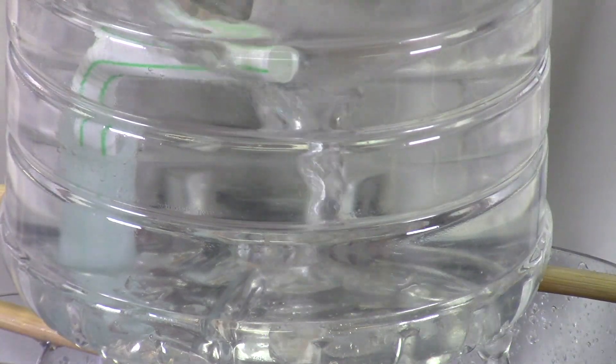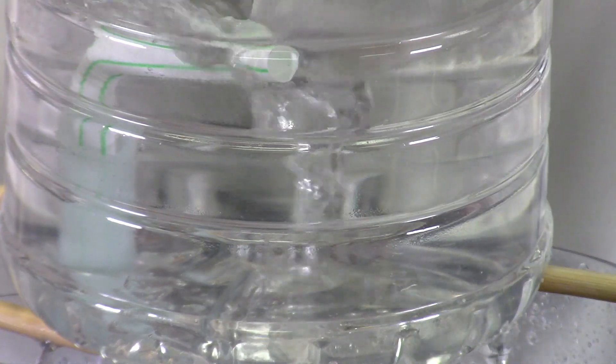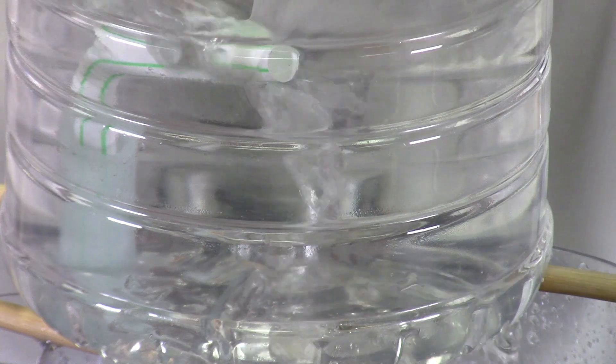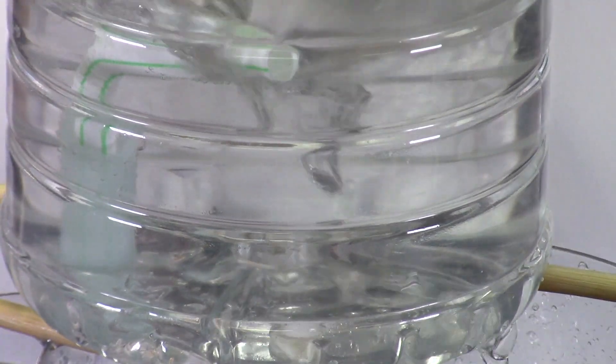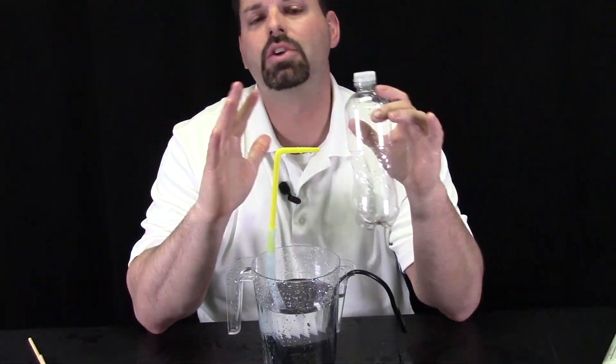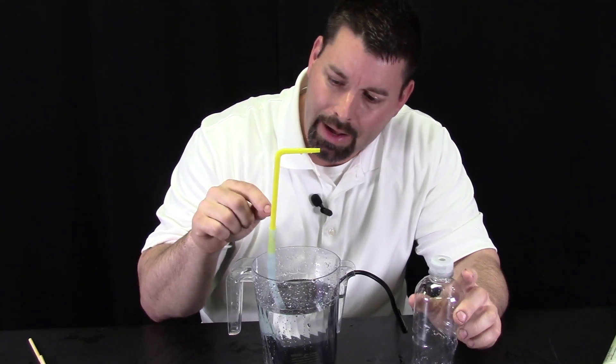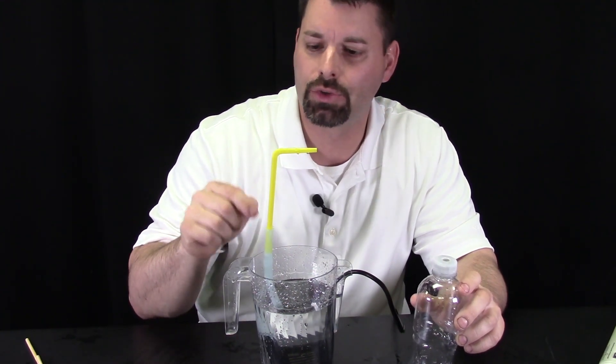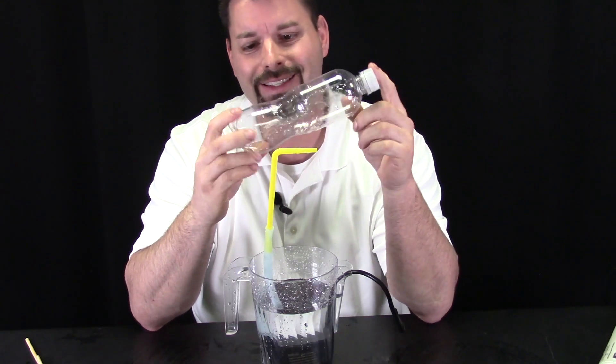Now I can't help but think what happens if we switch out this wider bottle with a thinner bottle. I wonder if we'd get a taller tornado. So let's give that a try. So now I want to try a different bottle, and for that I have to use a bigger straw. So I swapped out to a yellow straw that's a bigger diameter, and I am using a skinny bottle.